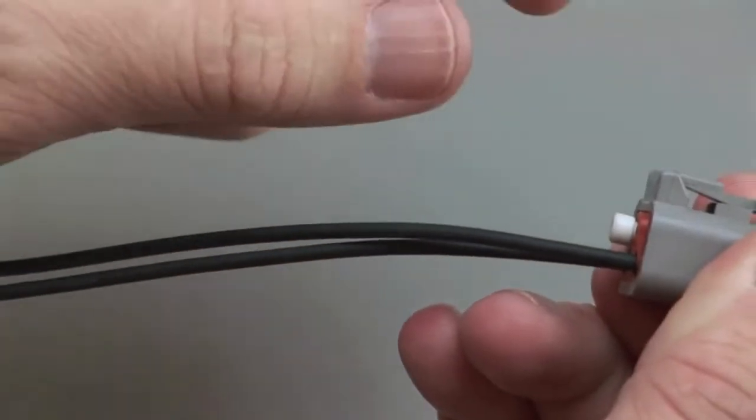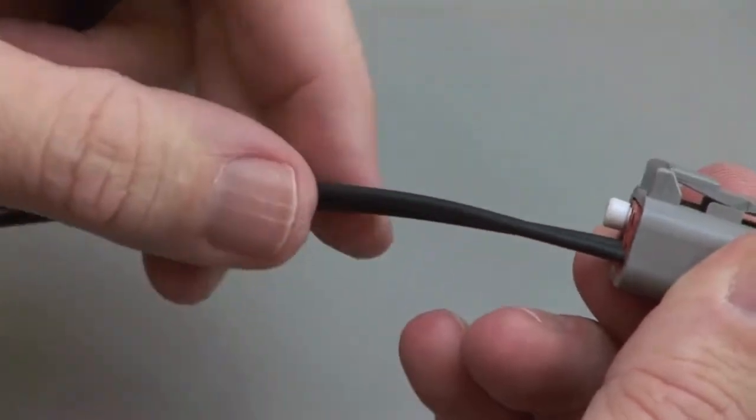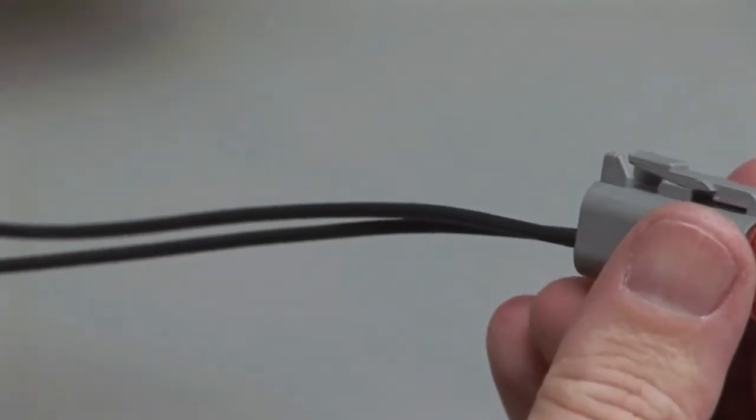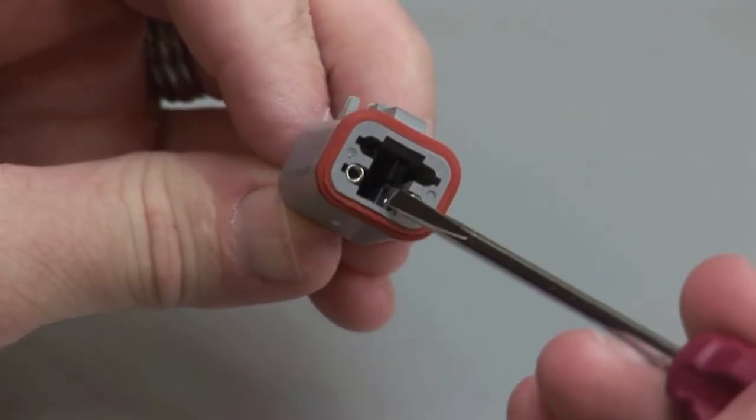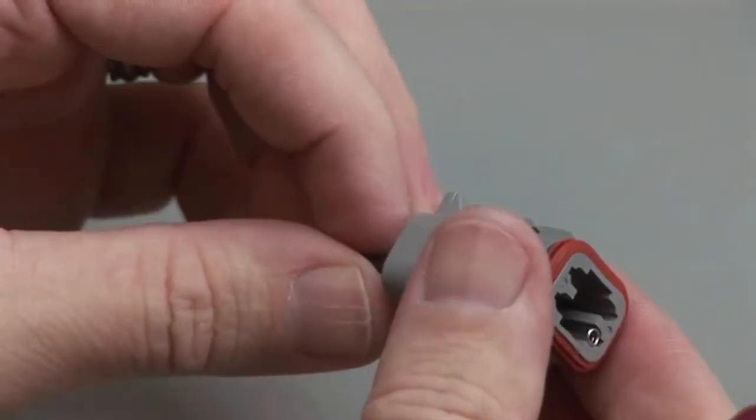Removing the contact may dislodge the rear grommet, so it may be necessary to hold the rear grommet in place when pulling the wire out. Repeat this process for all of the wires in the plug and the receptacle.